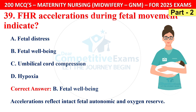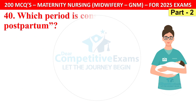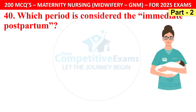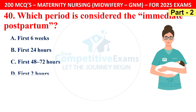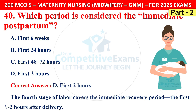Question 40: Which period is considered the immediate postpartum? Options are first 6 weeks, first 24 hours, first 48–72 hours, or first 2 hours. The correct answer is D — first 2 hours. The 4th stage of labor covers the immediate recovery period, the first approximately 2 hours after delivery.